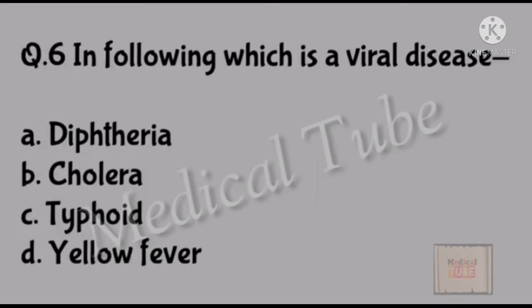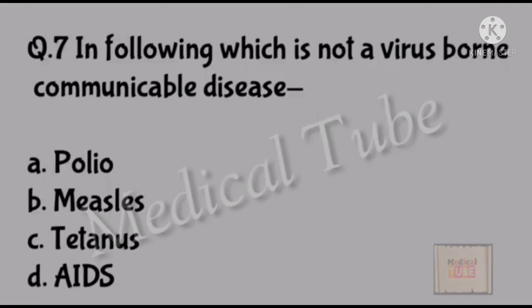Sixth number question: Following which is a viral disease? Correct answer is A: Diphtheria. Seven number question: Following which is not a viral communicable disease? Correct answer is C: Tetanus.